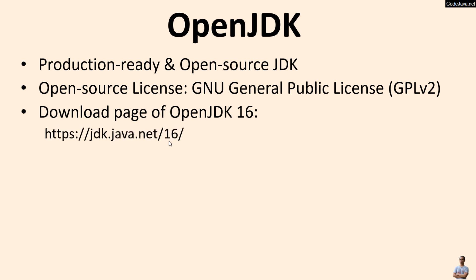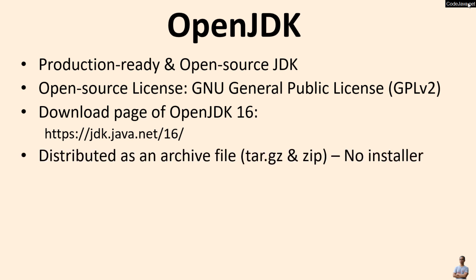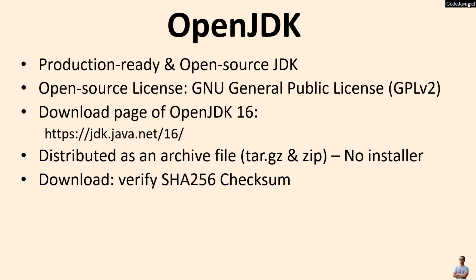The URL is jdk.java.net/16 and OpenJDK is distributed as an archive file — .tar.gz and .zip. Note that there is no installer program for OpenJDK, and you should verify the SHA-256 checksum for the downloaded file.